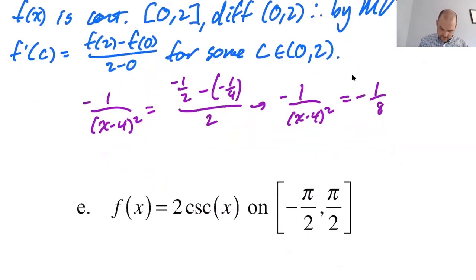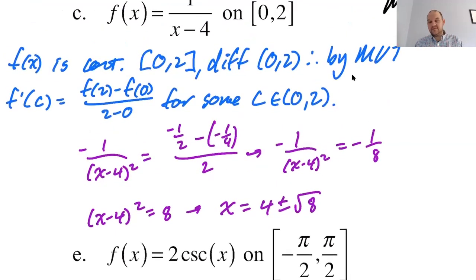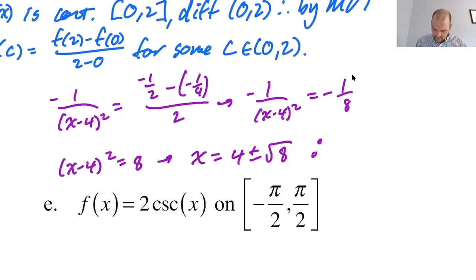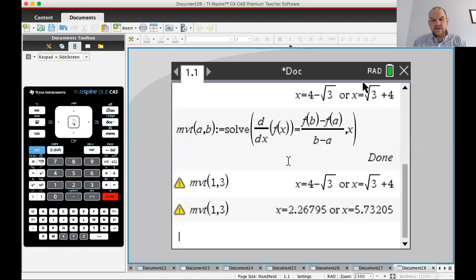So bring the exponent down, subtract one. We get negative quantity X minus four to the negative two. Rewrite it as a fraction equals F of two is negative one half minus F of zero is negative one fourth over two. This will give us negative one over the quantity X minus four squared. Negative one half plus one fourth is negative one fourth over two is negative one eighth. That gives us X minus four squared equals eight, which means that X is four plus or minus radical eight. Now look at your interval, four plus something could not be in the interval. So it must be four minus radical eight. Therefore, C equals four minus radical eight is the value guaranteed by the mean value theorem.